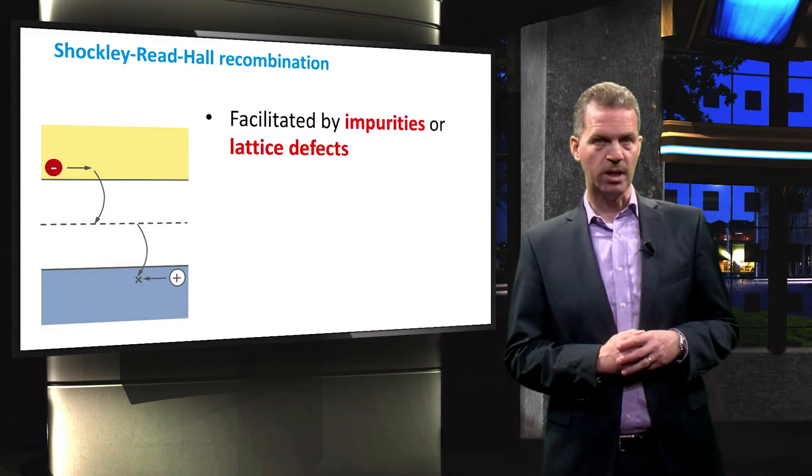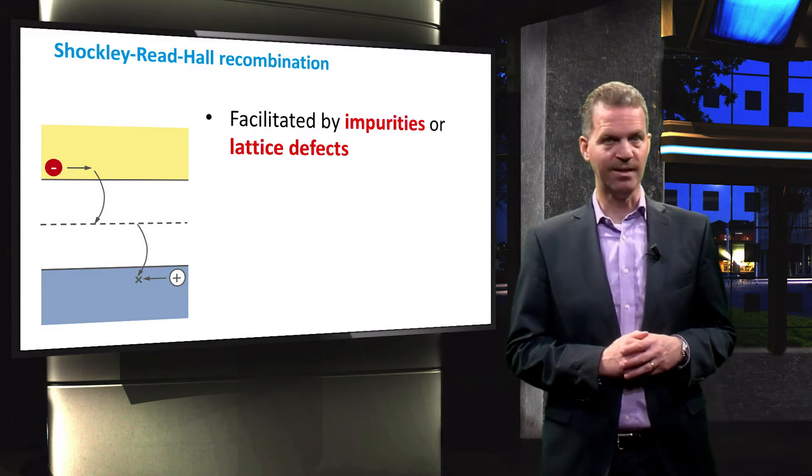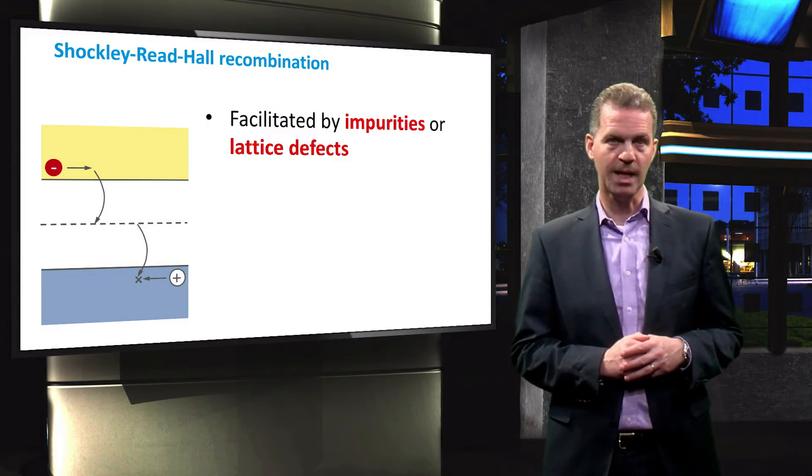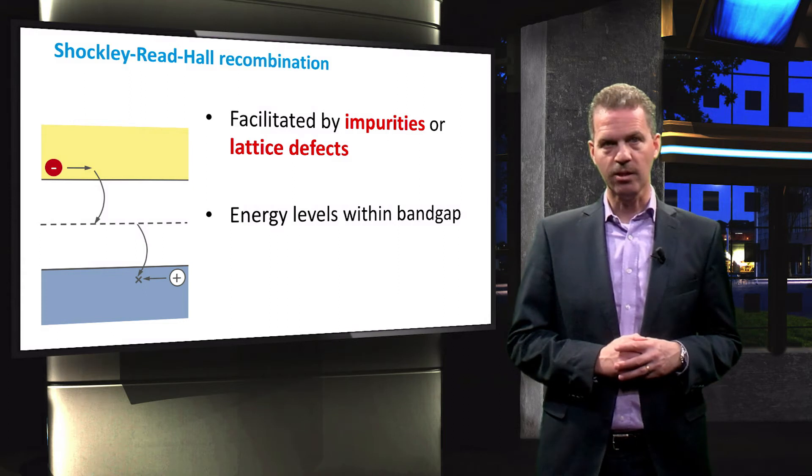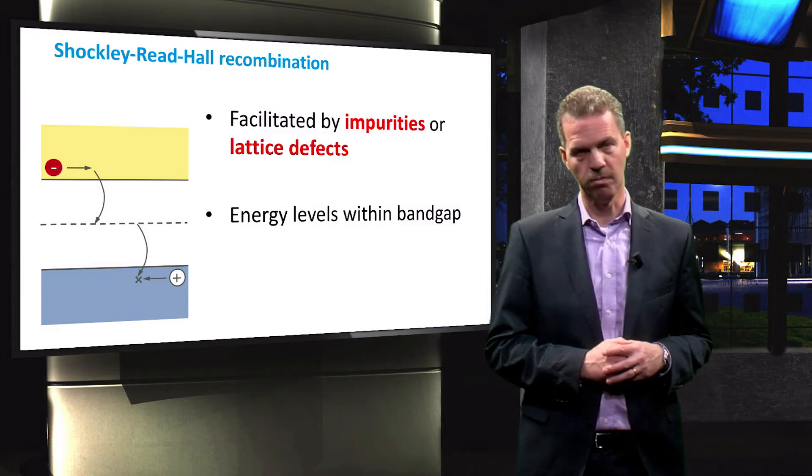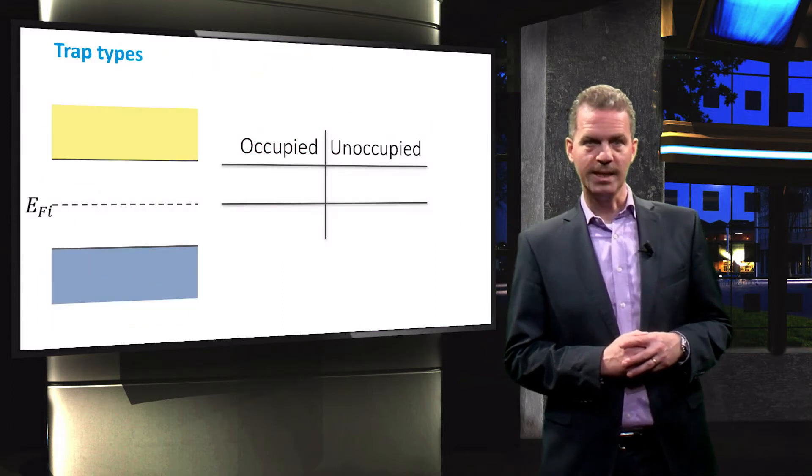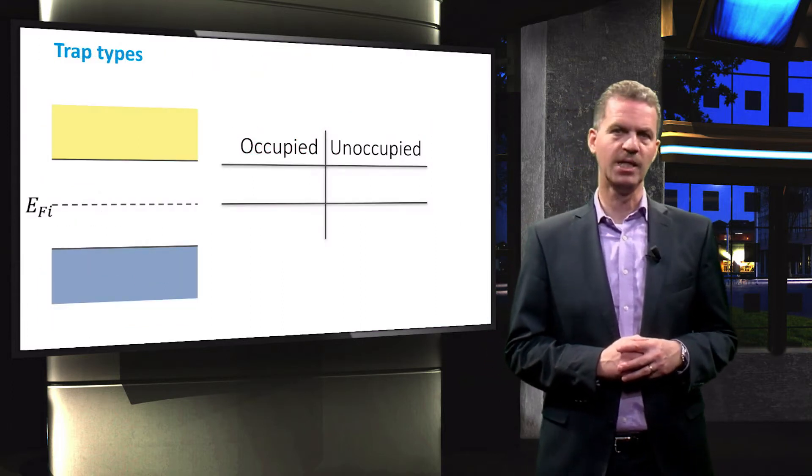SRH recombination is indirect recombination and is facilitated by an impurity atom or lattice defect. These recombination centres introduce energy levels within the bandgap which facilitate carrier recombination. We distinguish two types of recombination levels.